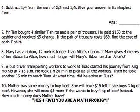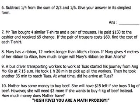12 meters longer than Alice's ribbon. So that means now there are two people. So we draw one Mary and one Alice. We don't know what is Alice's, but we know that Mary is 12 meters longer than Alice. If Mary gives 4 meters of her ribbon to Alice, how much longer will Mary's ribbon be than Alice's?